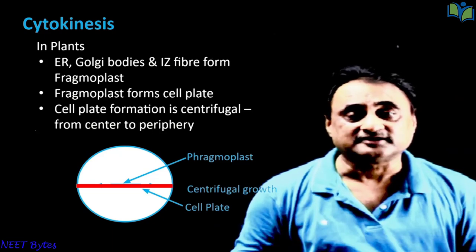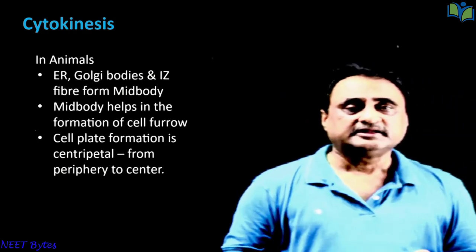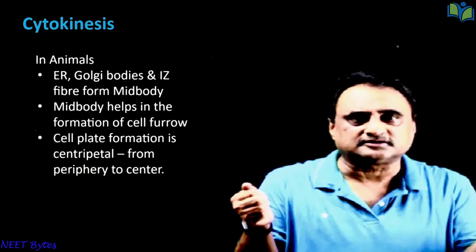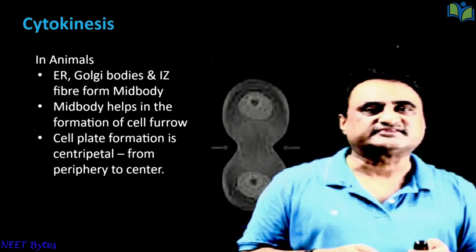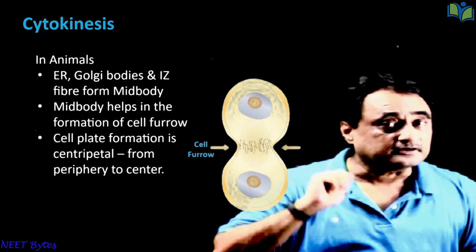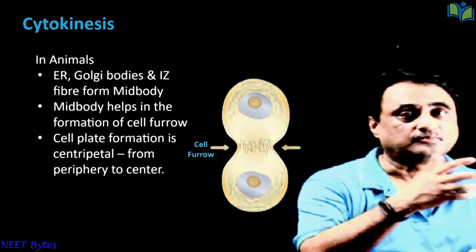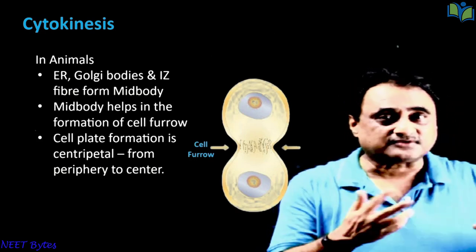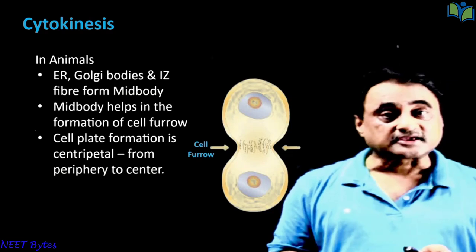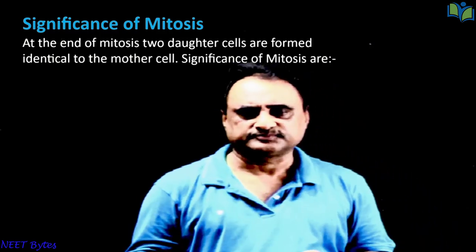In animals, the condition is different. A mid-body attracts the membrane from both sides, and as a result a cell furrow is formed. The pattern here is centripetal, moving from the periphery toward the center. So in plants, cytokinesis occurs by cell plate formation, and in animals it occurs by cell furrow formation.